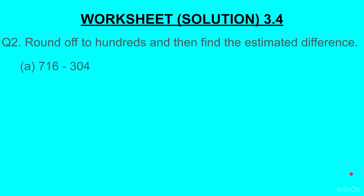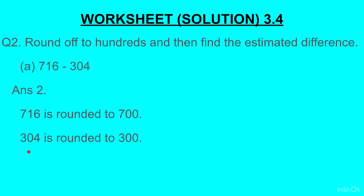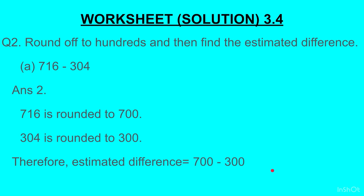Question 2, Part A: 716 minus 304. Round off to hundreds, so we look at the tens place. 716 — the tens place is 1, which is less than 5, so 716 rounds off to 700. 304 — the tens place is 0, which is less than 5, so 304 rounds off to 300. The estimated difference is 700 minus 300, which gives us 400.